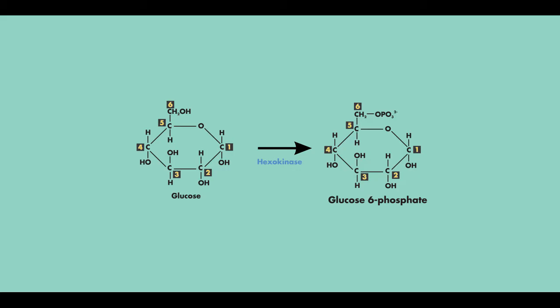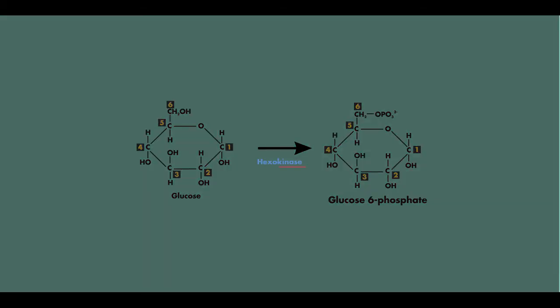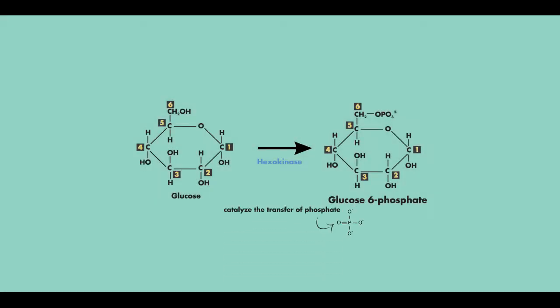Let's take a side note here. So do you notice the word kinase in hexokinase? Well, kinases are enzymes that catalyze the transfer of phosphate molecules. Remember this because there are 4 different kinases in glycolysis that facilitate the transfer of a phosphate molecule.